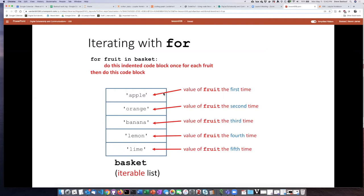So the first time the loop operates, the value of fruit is going to be apple. The second time we go through the loop, the value is going to be orange. The third time we go through the loop, it'll be banana and so forth until we have iterated through every item on the list.